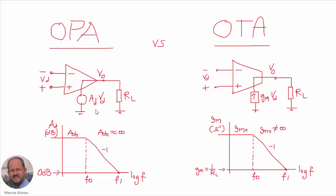In an operational amplifier, the output behaves like a voltage source, which has a value equal to the differential gain AD times the differential voltage VD. The frequency response shows a DC gain AD0, then at the first cutoff frequency F0 we have a decrease in differential gain following a slope of minus 20 dB per decade, until reaching at frequency F1 the value of 0 dB. Usually the DC gain is so high that we can consider it almost infinite.